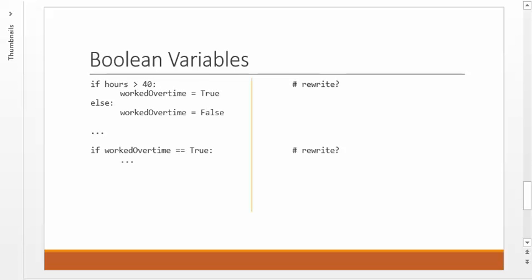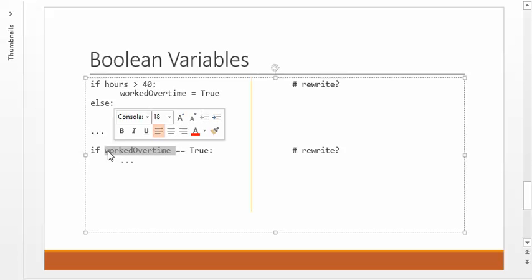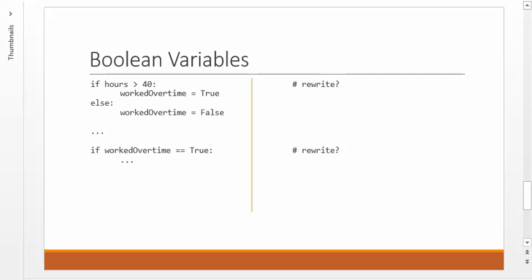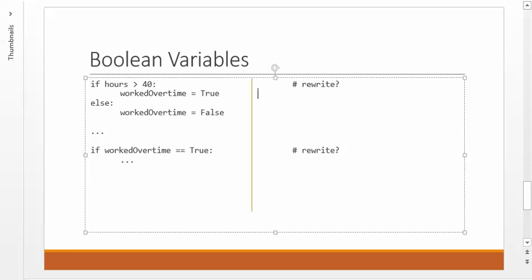So the variable contains true or false, which is very interesting because then later in the program, you can check it with something like this. If workedOvertime equals, right, equal equal, if it's equal to true, then do the following. Now, one thing that I want you to pay attention to here is if you really deeply understand Boolean variables, you would not write the code that's on the left here. There's a much simpler way to write this stuff. But to the uninitiated, it looks strange to the eye, but I want you to be aware that it exists. And so I'm going to come over here and let's do a rewrite and see if this makes sense to you.